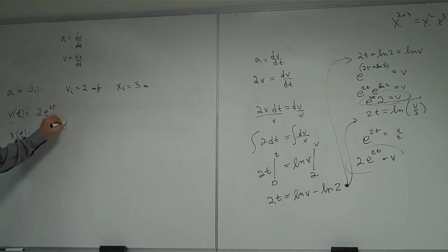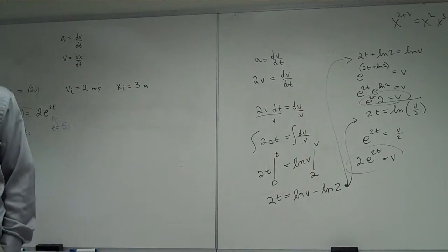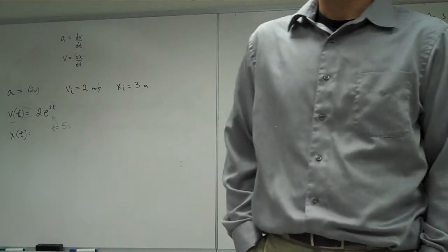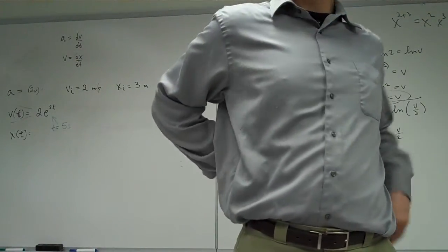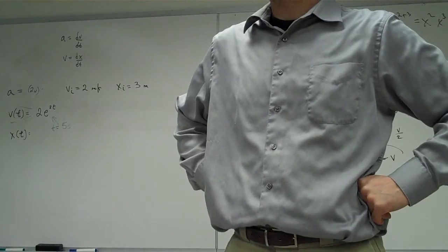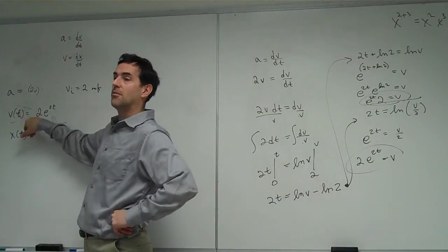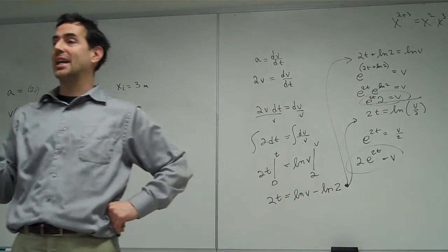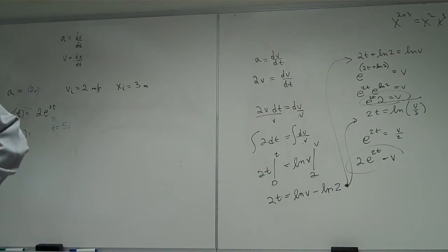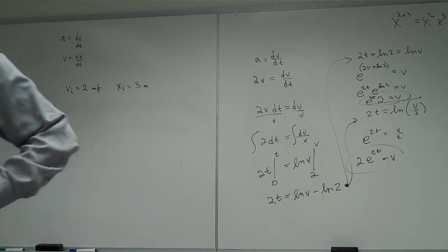If I put in a 5 for time, my velocity would be 2 times e to the 10th power. Does anyone have a calculator? You can do e to the 10th power. Okay, 22,000 times 2, 44,000. So after 5 seconds of this, starting at 2 meters per second, after just 5 seconds, my velocity is 44,000 meters per second. That's 88,000 miles an hour.